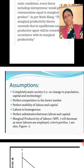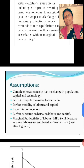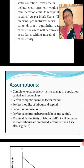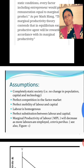The final assumption is that marginal productivity of labor (MPL) will decrease as more laborers are employed, or marginal productivity of labor will increase as fewer laborers are employed. That is, as we apply more and more laborers, MPL decreases; and as we employ fewer and fewer laborers, MPL increases.